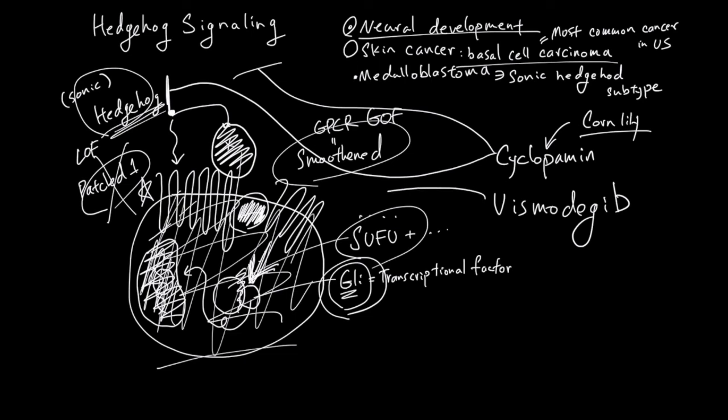And then the second molecule that blocks this pathway is called vismodegib. Vismodegib acts on smoothened. It's an antagonist. So it blocks smoothened releasing the GLI.